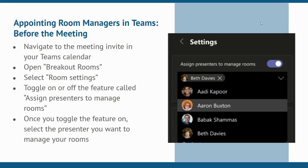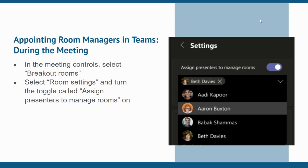Go to your meeting invite in your Teams calendar to assign a breakout room manager before the meeting. Then open breakout rooms and select room settings. From here, you can switch the toggle on for assigning presenters to manage rooms. Once you turn the toggle on, choose which presenters you want to manage breakout rooms. To appoint a manager during a meeting, go to breakout rooms in your meeting controls. Select room settings and turn the toggle on for assigning presenters to manage rooms. By default, any meeting presenter will be made a breakout room manager, but you can also choose your presenters from the provided drop-down menu.